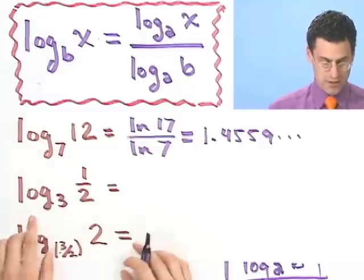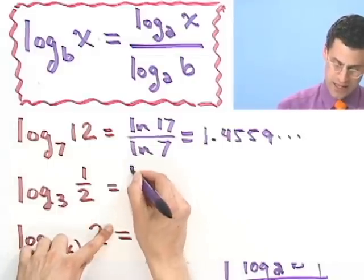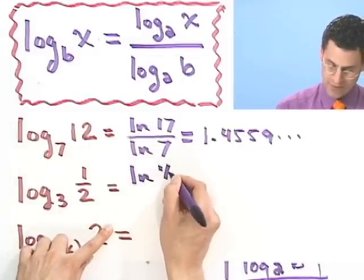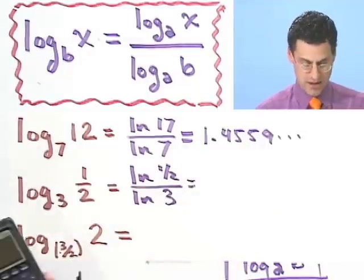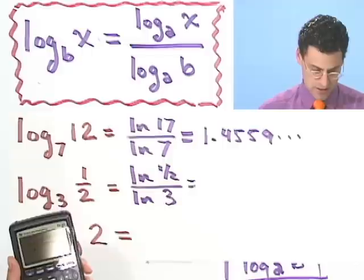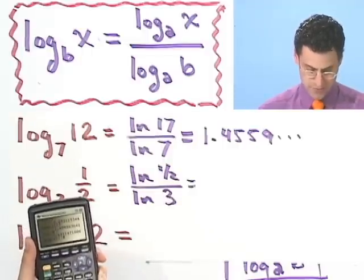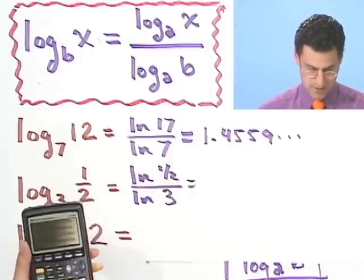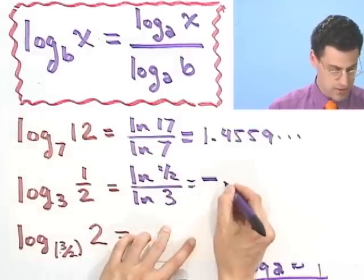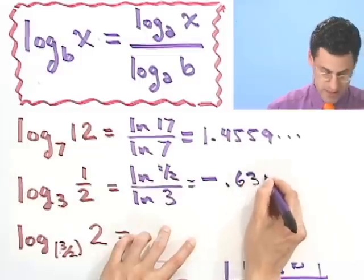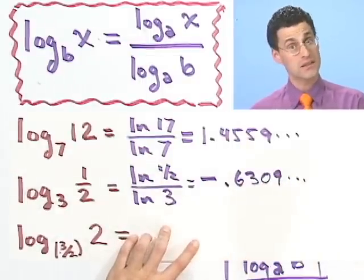Let's try this one. Log base 3 of 1 half. We could use natural log again. Natural log of 1 half divided by natural log of 3. It's really easy once you see the formula. Use the calculator. So we take natural log of 1 half and divide it by natural log of 3. And we get minus .6309 stuff.